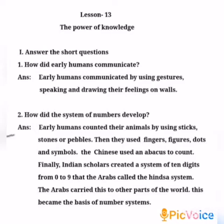Second question answer: Early humans counted their animals by using sticks, stones, or pebbles. Then they used fingers, figures, dots, and symbols. The Chinese used an abacus to count. Finally, Indian scholars created a system of 10 digits from 0 to 9, which the Arabs called the Hindu system. The Arabs carried this to other parts of the world, and this became the basis of number systems.